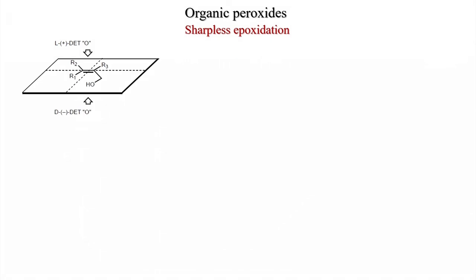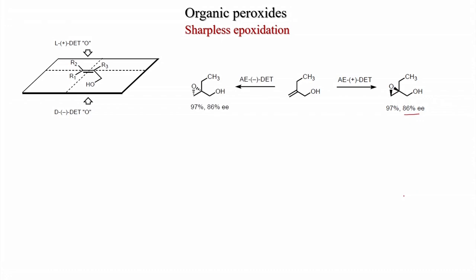For a substituted allylic alcohol drawn in the standard orientation, (+)-tartrate reacts from the top face and (−)-tartrate from the bottom face. For a specific compound drawn with the alcohol carbon at the lower left, (+)-DIPT gives the epoxide from the top face with 86% ee, and (−)-DIPT gives the epoxide from the bottom face, also 86% ee.